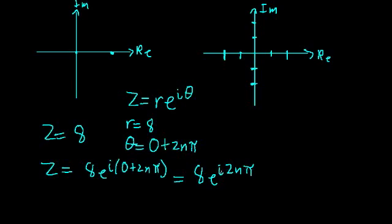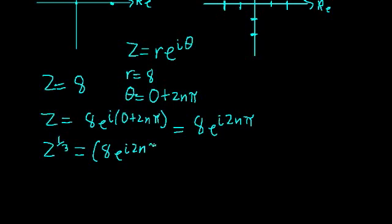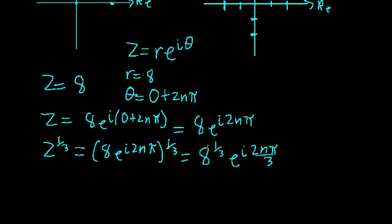Now what we're going to do is figure out what z to the one-third power is. We know that's going to be 8 times e to the i 2n pi, raised to the one-third power. Using our properties of exponents to distribute out this exponent, that's just 8 to the one-third power times e to the i 2n pi over 3. Taking the principal cubed root, since our magnitude r is a positive real number, z to the one-third is just 2 times e to the i 2n pi over 3.